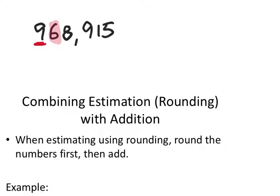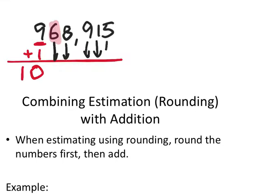Since it's 5 or more, I'm going to add 1 to our target place value, which front-end rounding is just the place value farthest to the left, which for us is 100,000s. Now that's 9 plus 1, which is 10. So I would actually write that as 10. And then any other place values to the right of the 100,000s place value is going to just drop as a 0. So 1, 2, 3, 4, 5 place values are going to drop as 0s like this.